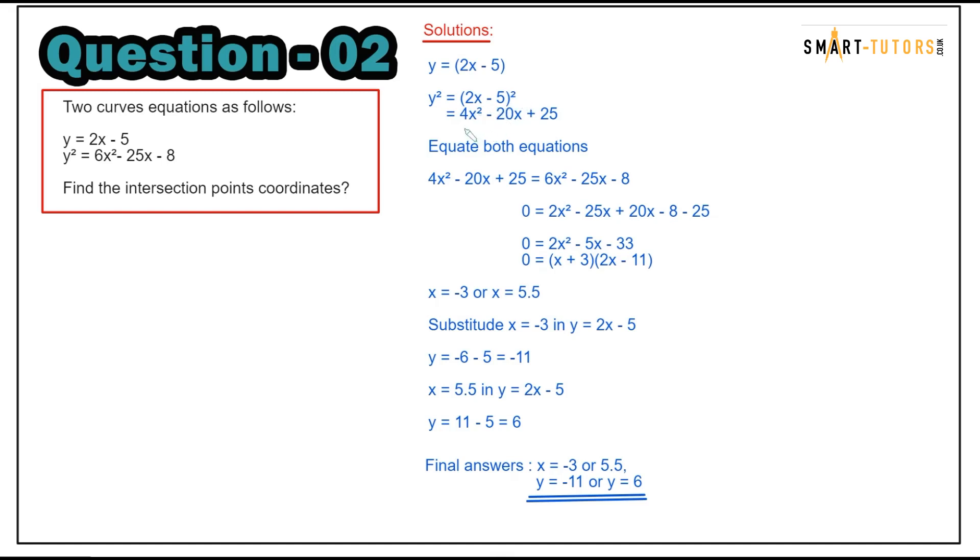Y equals 2x minus 5 squared gives 4x squared minus 20x plus 25. Equate both y squared parts: 4x squared minus 20x plus 25 equals 6x squared minus 25x minus 8. Bring everything to one side to get 2x squared minus 5x minus 33 equals 0. Factor into two brackets to get x equals negative 3 or x equals 5.5. Substitute to find y equals negative 11 or y equals 6.